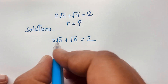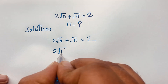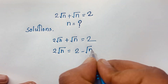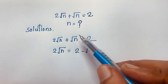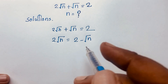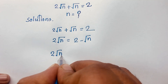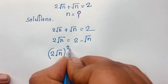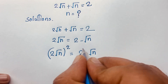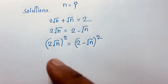First, we rearrange the expression: 2√n = 2 - √n. We move the positive √n to the other side, making it negative. Now at this moment we square both sides, so (2√n)² = (2 - √n)².